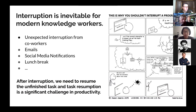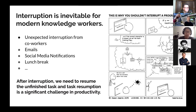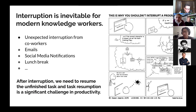Interruptions are inevitable for modern knowledge workers, like unexpected interruptions from your colleagues or email notifications from your phone. They just pop up. Like in this cartoon, a programmer is thinking about algorithms but then gets interrupted by others. All these efforts are lost. After an interruption, we need to resume the unfinished task, and task resumption really takes our time. Interruption and task resumption are also problems in improving our working and studying productivity.